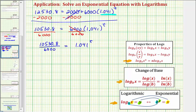So notice for our exponential equation, the base is 1.041, the exponent is T, and the number would be this quotient. Which means as a log equation, we would have log base 1.041 of the quotient, 10,530.8 divided by 6,000 must equal the exponent T.